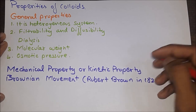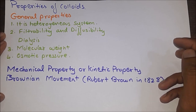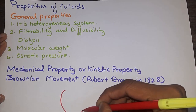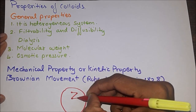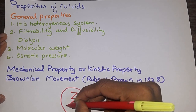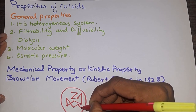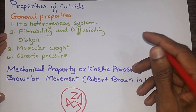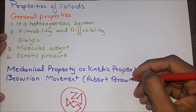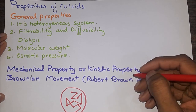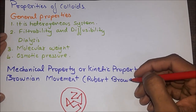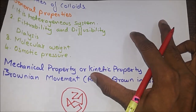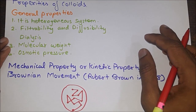Mechanical/kinetic property — Brownian movement: it is defined as the constant random zigzag motion of colloidal particles in a colloidal solution. The particles move in a zigzag path observable using an ultra microscope. This movement depends on the viscosity of the solution and is more rapid if the size of particles is small. Brownian movement is due to the repulsion between colloidal particles carrying the same electrical charge, and also due to collision of colloidal particles with the molecules of the dispersion medium. Its application includes determination of Avogadro's number; Brownian movement also makes the colloidal solution stable.